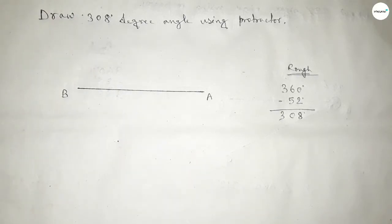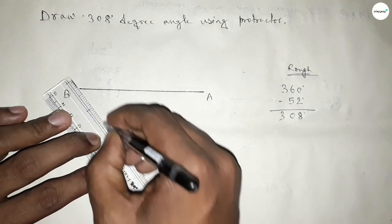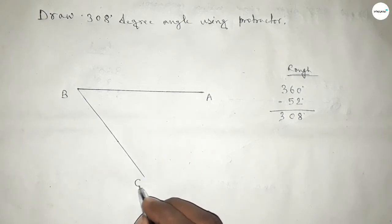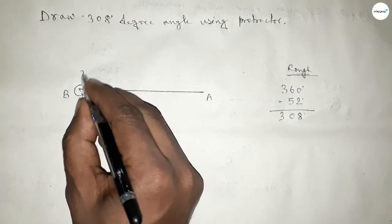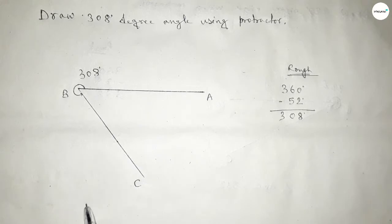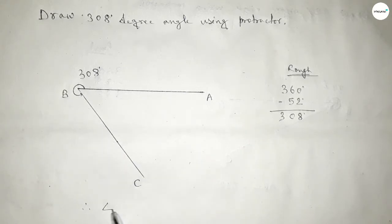Now joining this side and taking here point C. So angle ABC, up to this, this is 308 degree angle. Therefore, angle ABC equals 308 degrees.